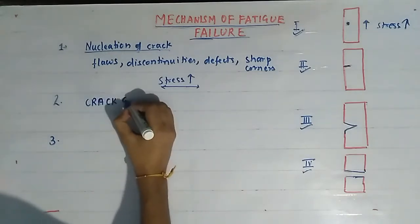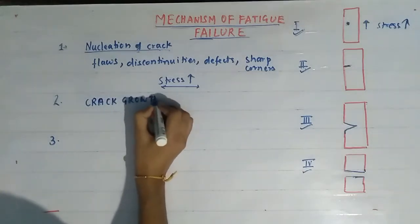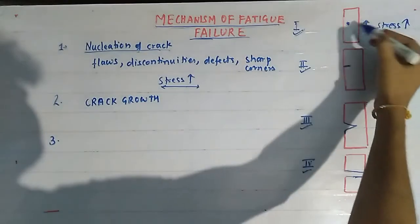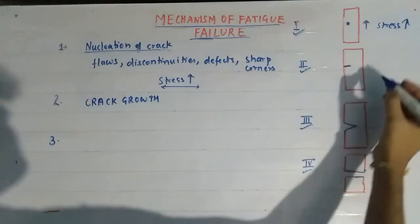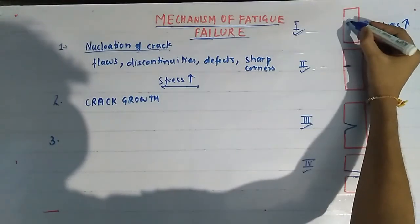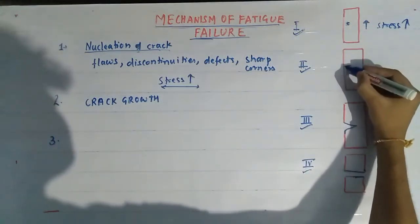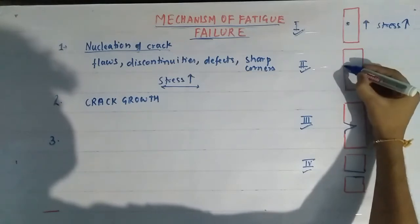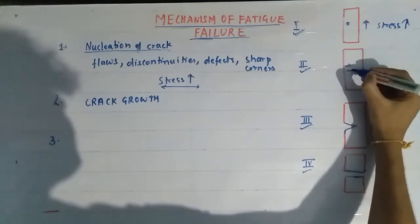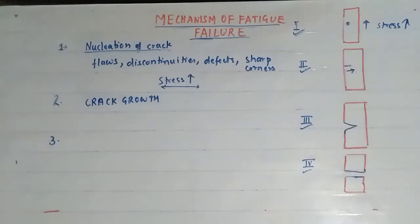Crack growth because of this discontinuity. This tiny, very tiny nucleation of the crack spot will turn into a site of crack growth, and crack growth will be in this direction.